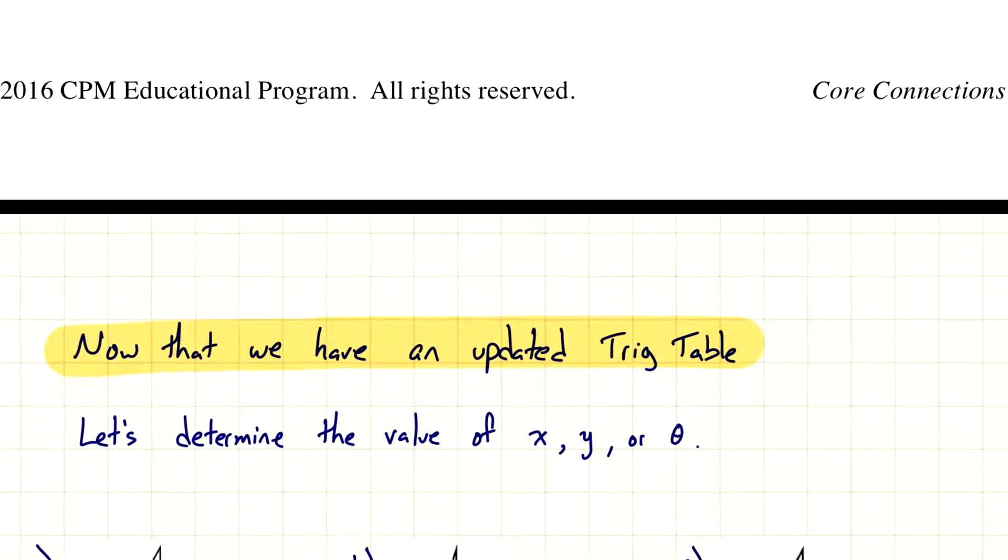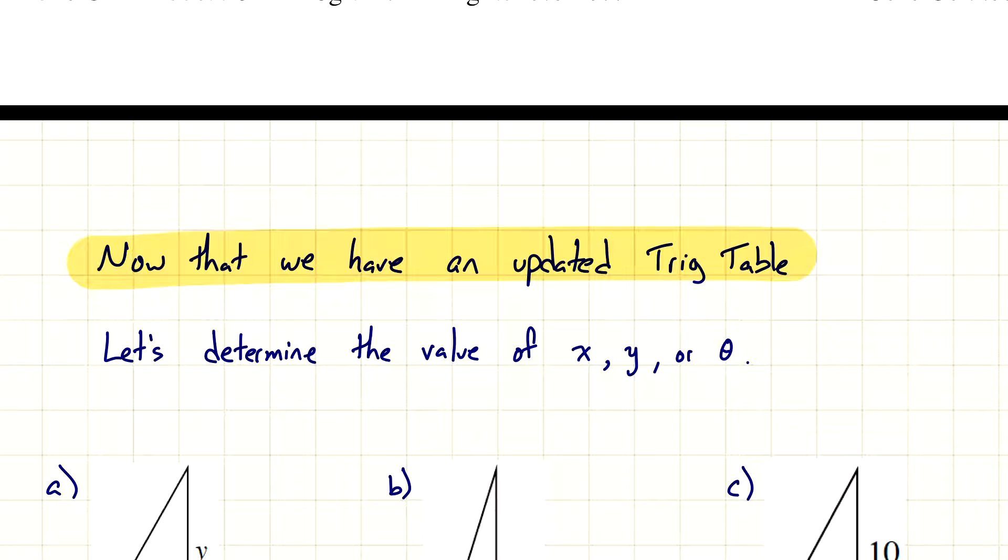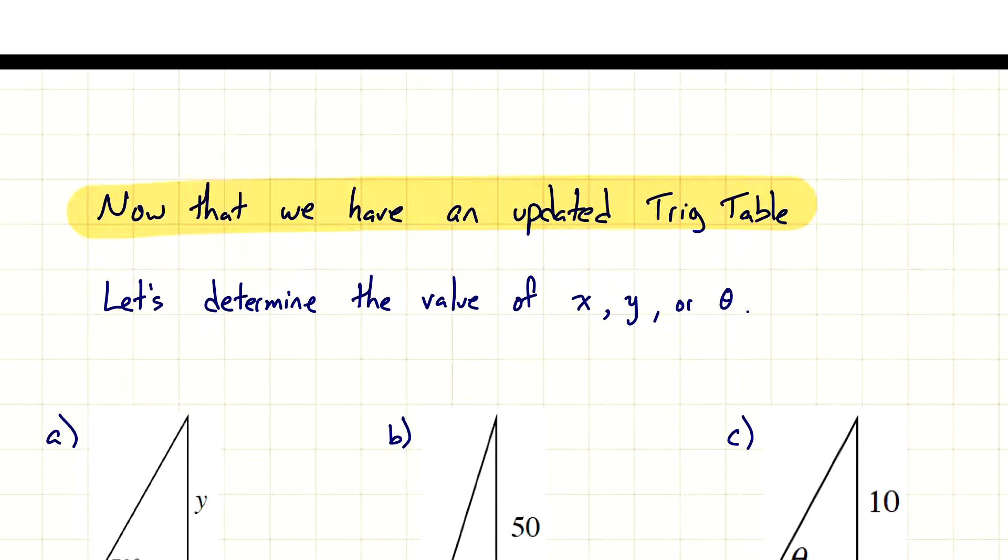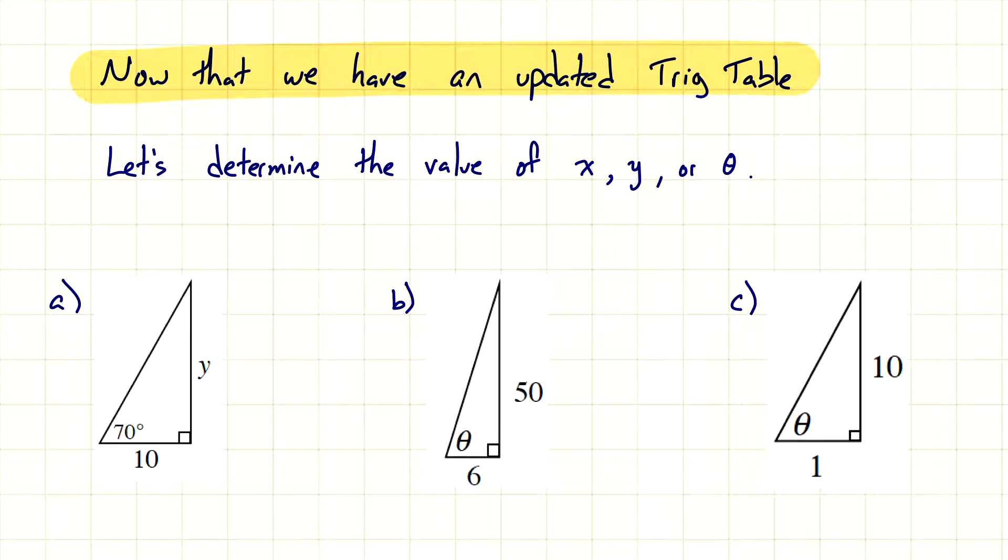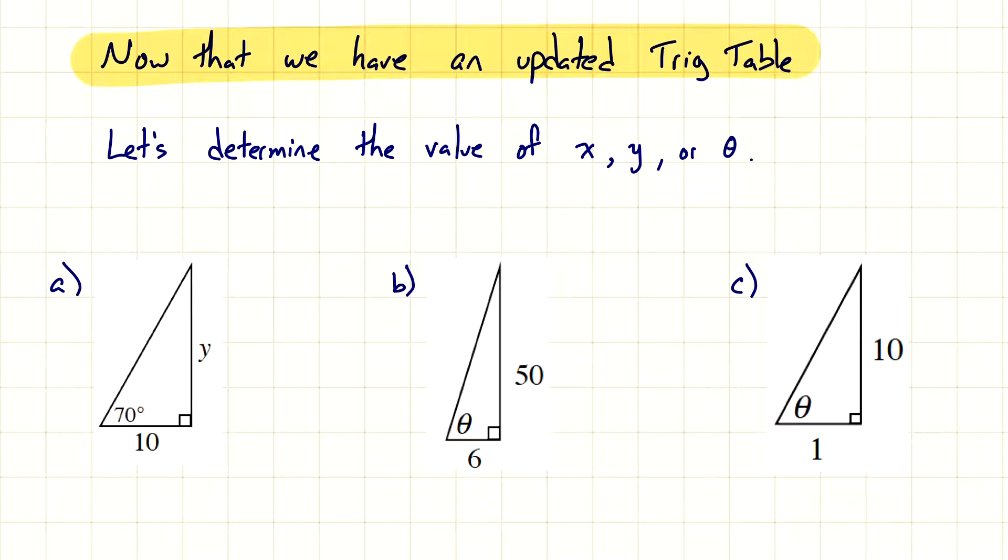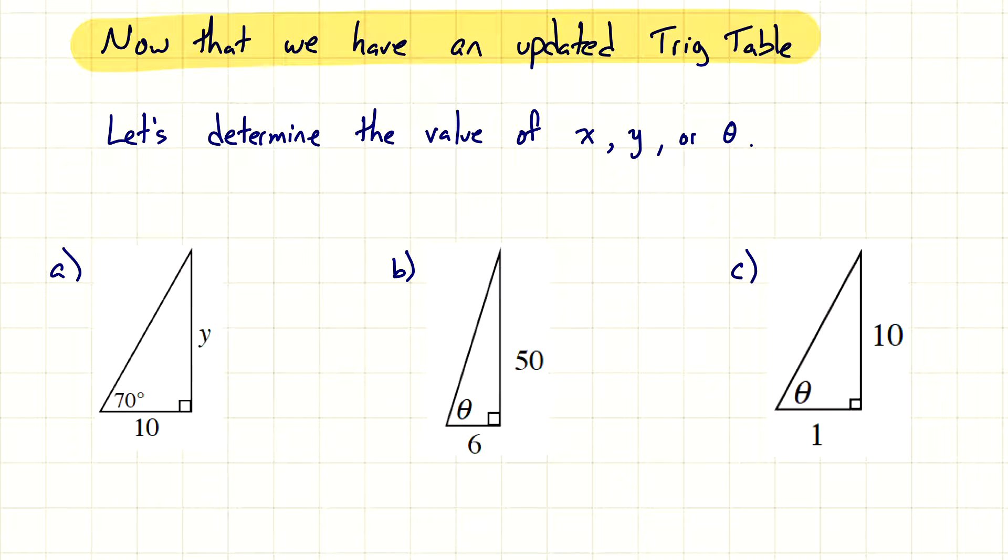We're going to use that information now that we have an updated trig table. Hopefully you have all that information near you. There are, I believe, five, six, seven practice problems for us to go over. I'm going to give you some time. I really think you should try to do these on your own. But most likely I'm still going to go over these. If you're going to try this on your own, I would probably pause it at this moment, give it a go, and then see if you get these correct.